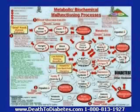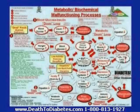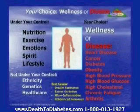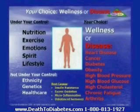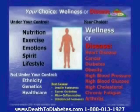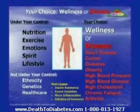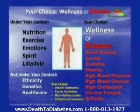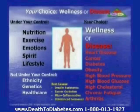What are the sequence of events? How does the disease actually develop? From all of those analyses, what's really important to understand — and I think everyone in this room knows — is that some of the key factors are obviously nutrition, exercise, your emotional health, your spiritual health, your lifestyle, and all of those are under our control. There are other factors such as your ethnic background, your family background, and the healthcare system.